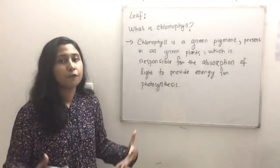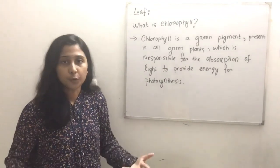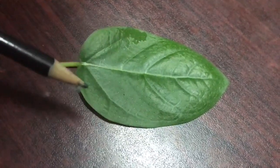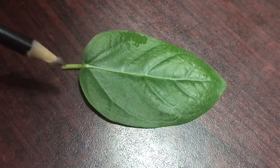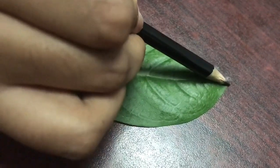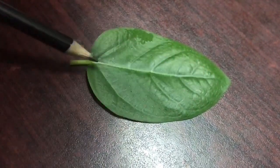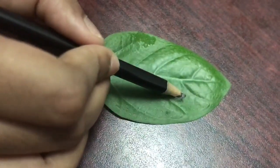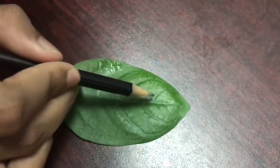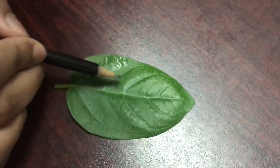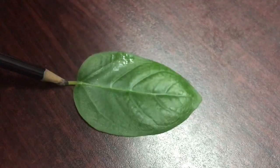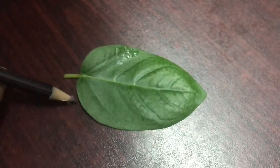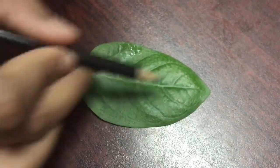Here you can see an actual leaf. In this leaf, you can see the tip, the midrib, the lamina, and the tiny little veins. At the bottom you can see the petiole, and this part here is the margin. This is a practical example of the parts of a leaf.